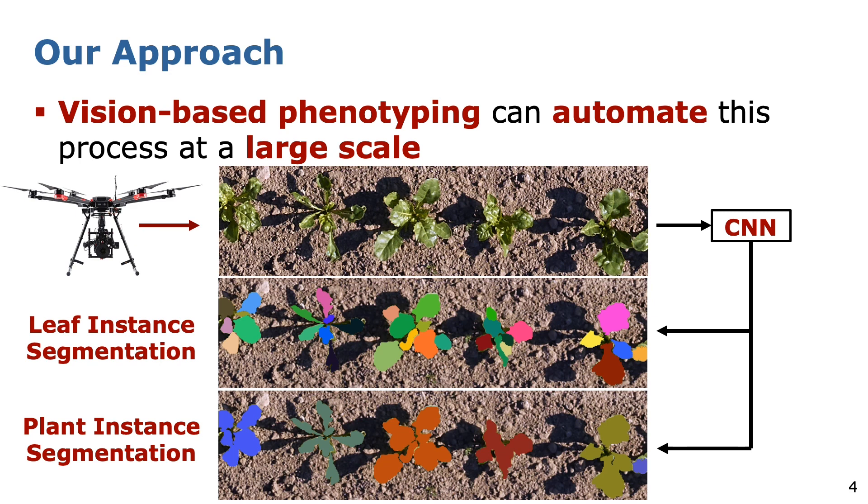In this work, we propose a method which performs a two-fold instance segmentation based on imagery recorded by UAVs on real fields. At the bottom, we show the procedure of our approach. First, we feed the RGB input image to our fully convolutional neural network, which provides us with two final outputs.